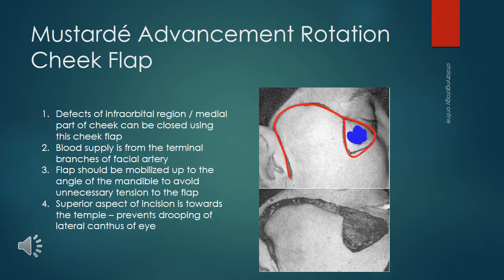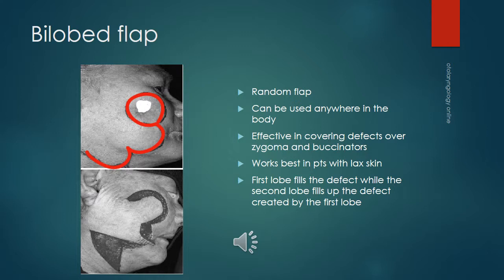The Mustardé advancement-rotation cheek flap is an axial flap deriving blood supply from terminal branches of the facial artery. The superior portion of the incision should be carried up to the temple to reduce flap tension and prevent drooping of the lower eyelid. The vertical limb of the incision should be sited in the preauricular crease. This flap is useful for covering infraorbital and cheek defects. The bilobed flap is a random flap used in various parts of the body; patients should have lax skin for better cosmetic results. In the face, it is elevated superficial to the facial musculature; the first lobe covers the defect while the second lobe covers the donor area.